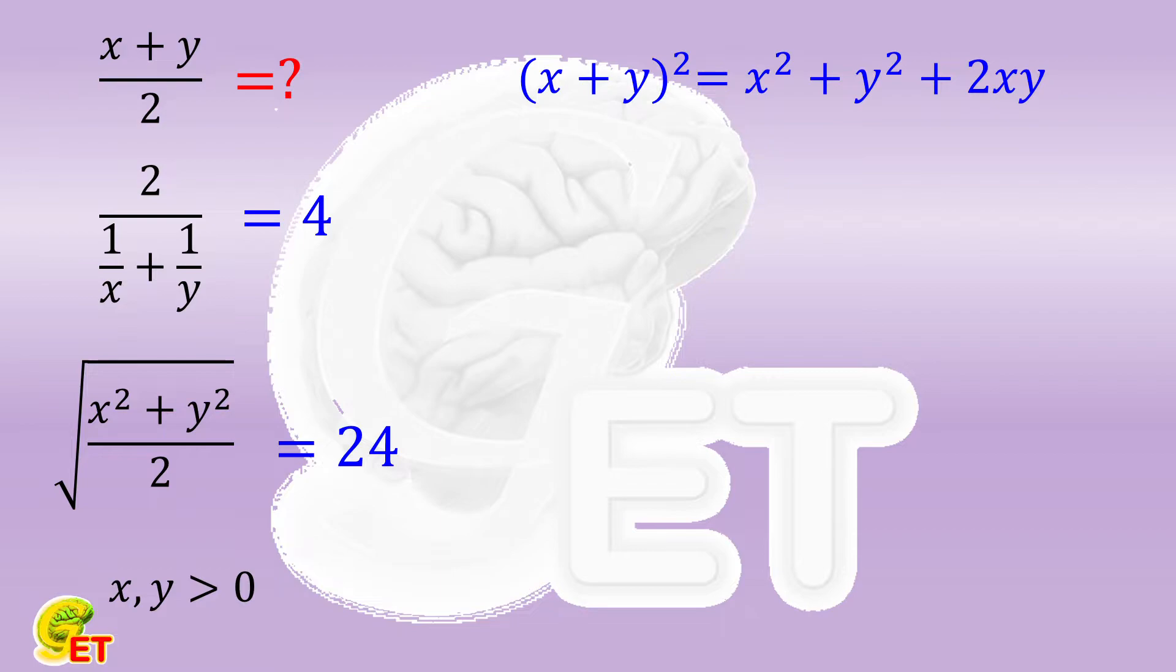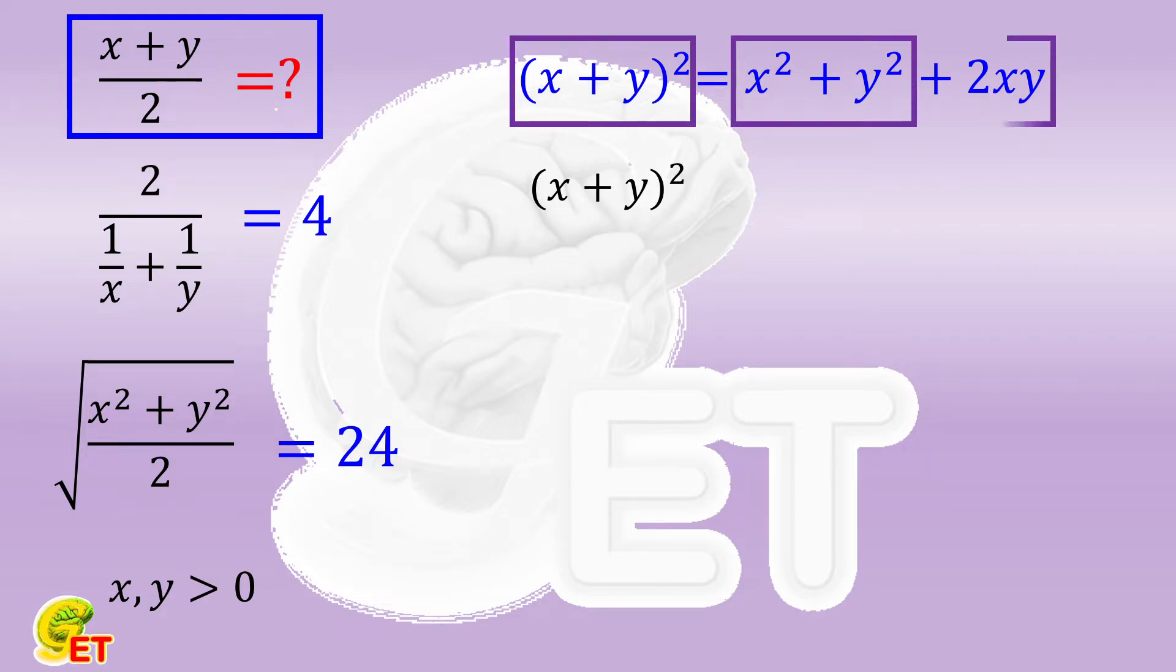The essence of the arithmetic mean is to find x plus y. So here we keep the part of x plus y. The other two parts do not have x plus y, so we have to find a way either to calculate them directly or to express them with x plus y.